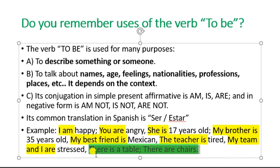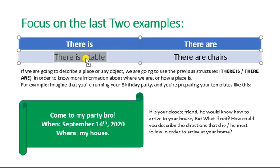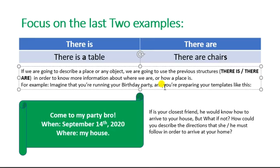We are going to focus on these two structures: 'there is' and 'there are.' For 'there is,' we identify: 'there is a table.' For 'there are,' as you can perceive, we don't have the article 'a,' so we have to add the suffix 's,' because we are going to talk in a plural way. If we are going to describe a place or any object, we use these structures — 'there is' and 'there are' — in order to know more information about where we are or how a place looks.